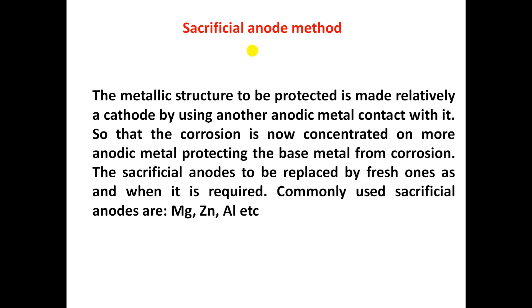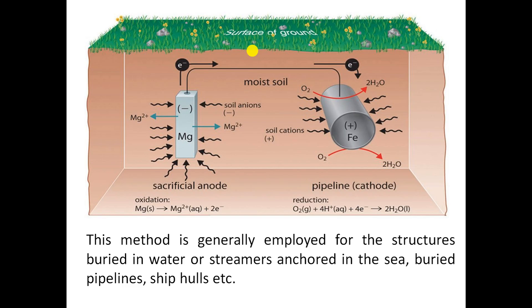The sacrificial anode is replaced by fresh ones as it is consumed continuously whenever required. Commonly used sacrificial anodes are magnesium, zinc, and aluminum. The more active metal is connected to the base metal through an insulated copper wire. Consider an iron pipe present inside moisture-containing soil. If moisture is present, the iron will generally undergo corrosion. In order to prevent this, we use a metal more active than iron — in this case, a magnesium metal bar connected to the iron pipe through an insulated copper wire.